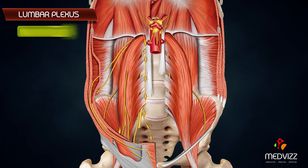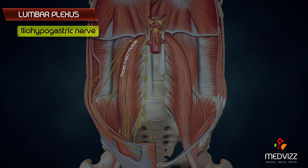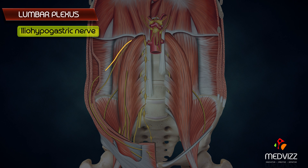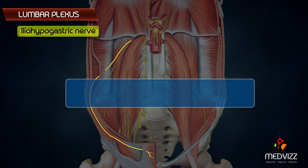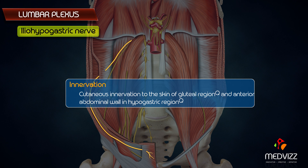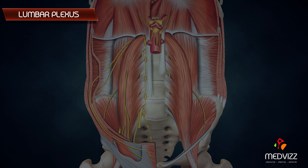The first individual nerve is the iliohypogastric nerve. It emerges beneath the lateral border of the psoas major muscle, passes downwards and laterally in front of the quadratus lumborum, and at the lateral border of the quadratus lumborum it pierces the aponeurotic origin of the transversus abdominis just above the iliac crest, running into the anterior abdominal wall. Its cutaneous innervation is mainly to the skin of the gluteal region and the anterior abdominal wall in the hypogastric region.